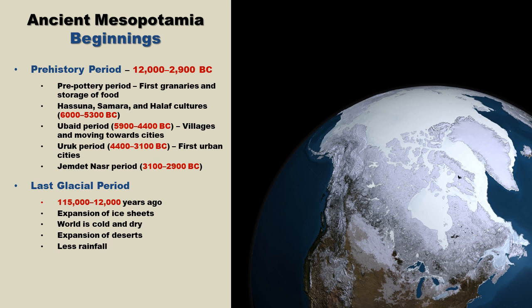During the glacial period, the world was a very inhospitable place. The expansion of vast ice sheets led to a large drop in sea levels, which in turn made the world extremely cold and dry. This also resulted in the expansion of deserts, and the reduction in rainfall led to diminished vegetation. All of this made it very difficult to start the large-scale civilizations we see after 10,000 BC.